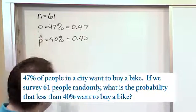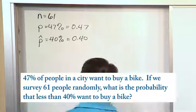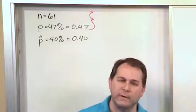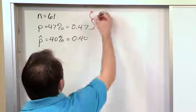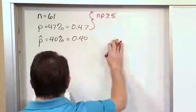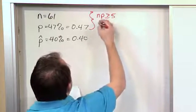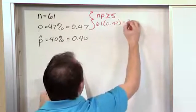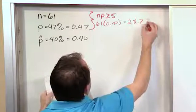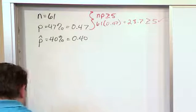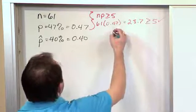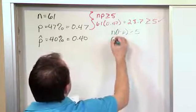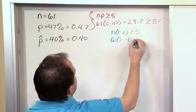Before we go any further, I want to verify that this problem can produce a sampling distribution of sample proportions that looks normal. The first constraint is that n times p must be greater than or equal to 5. We have n = 61 times p = 0.47, which gives 28.7 — that is greater than or equal to 5, so we put a checkmark there. Then let's check the other condition, which is n times (1 minus p), also greater than or equal to 5. So n is 61, and 1 minus p is 1 minus 0.47.